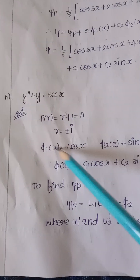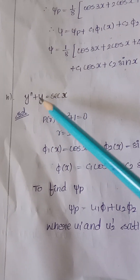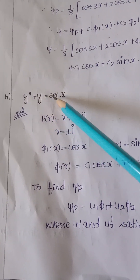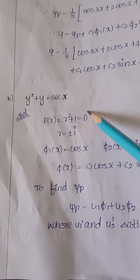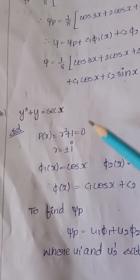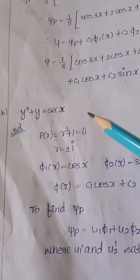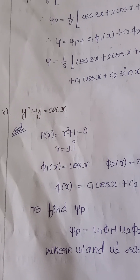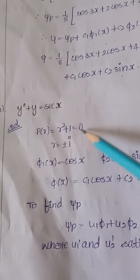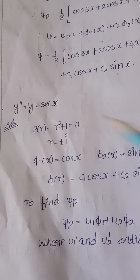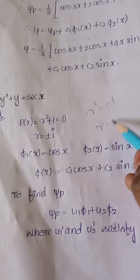First, we have to find the characteristic root. The polynomial p(r) is written as r² + 1, setting up the characteristic equation by equating to zero for the homogeneous equation — that is, r² + 1 = 0.